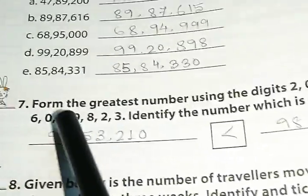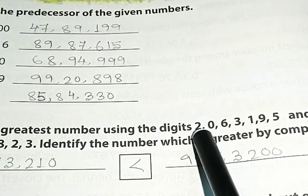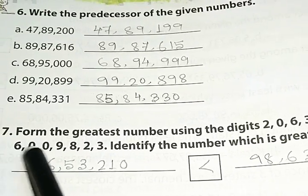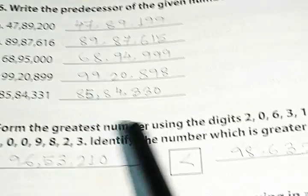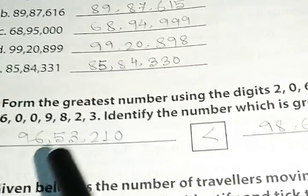Next, question 7. Form the greatest number using the digits. Each digit ko use karke, one greatest number banana hai. Again, yeh sab digit ko use karke, aur ek greatest number banana hai. Uske baad, humko compare karna hoga, which number is greater than each other.